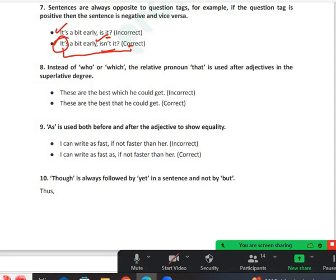We are moving to the next point. Instead of 'who' or 'which', the relative pronoun 'that' is used after adjectives in the superlative degree. These are the best which he could get - this is wrong.